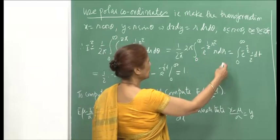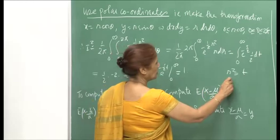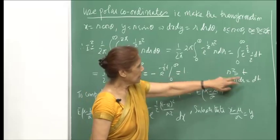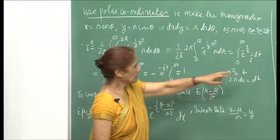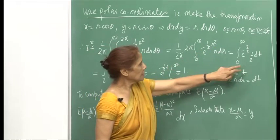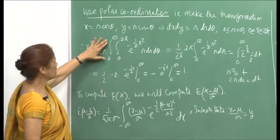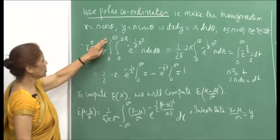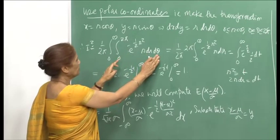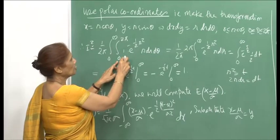So again we will make the transformation r squared = t. The limits are 0 to 2π and 0 to infinity for this thing. Here, because θ does not appear anywhere, this is simply 1, so with respect to θ, this just integrates to 2π, which I have written here.